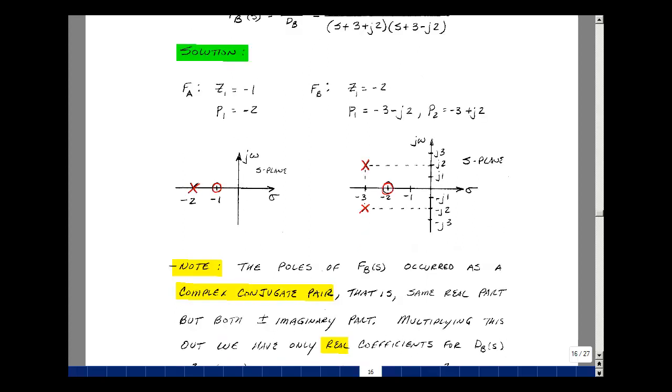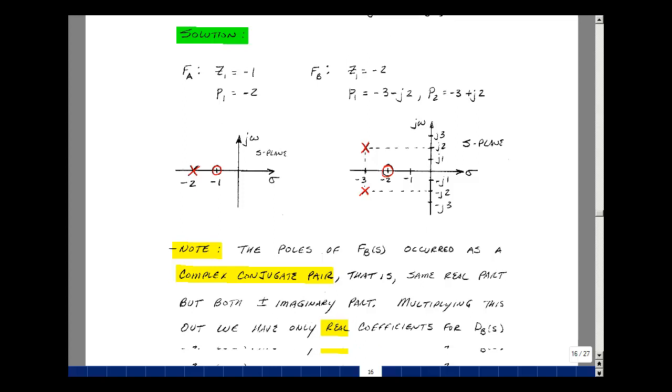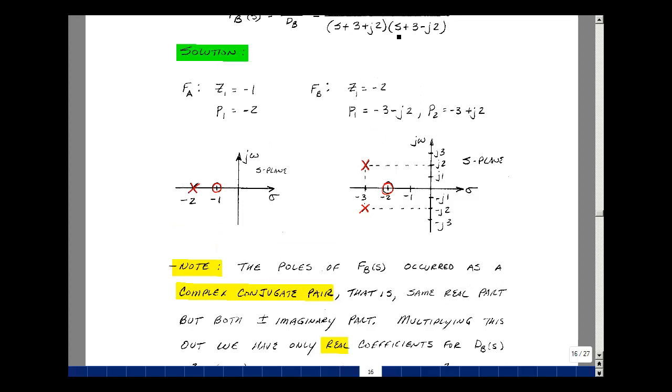One thing to note here, in the denominator, we had a pair of roots that were the complex conjugate of each other. In other words, the same real part, and then plus and minus the imaginary part. Now if you multiply that out, something interesting happens. s times s, so I get s², and then I have (3+j2)s, and then s(3-j2), and then (3+j2)(3-j2).